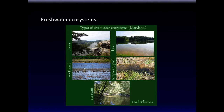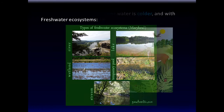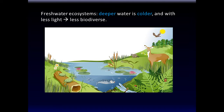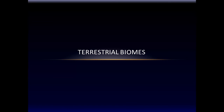Fresh water biomes include rivers, lakes, wetlands, and streams. Even in a small neighborhood lake, the deeper the water is, the colder it is, the less light there is, and the less biodiverse it is. There are more living things in the upper part of a lake than in the deeper part because of these differences. After this brief pause, we'll talk about terrestrial biomes.